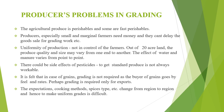Producers' problems in grading: the agricultural produce is perishable, and producers need money so they can't delay the goods sale for grading work. Uniformity of production is not in control of the farmers. There could be side effects of pesticides. In the case of grains, grading is not required as the bias of grains goes by feel and rates. The expectations, cooking methods, and spice types change from region to region.